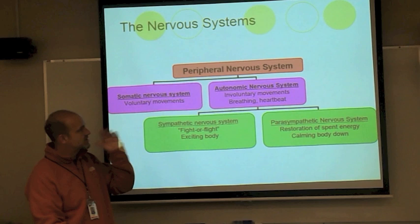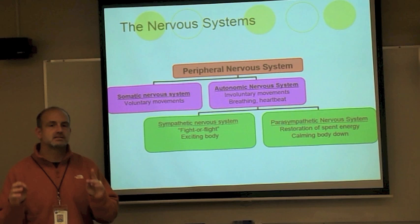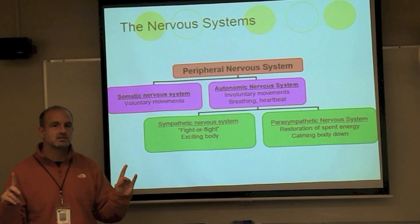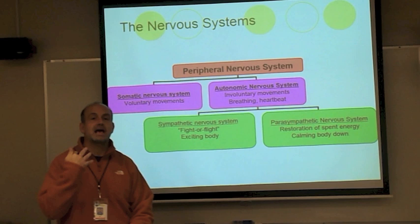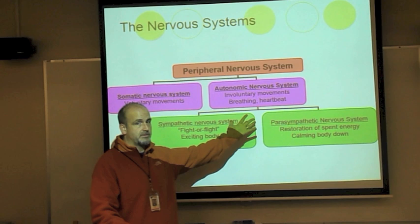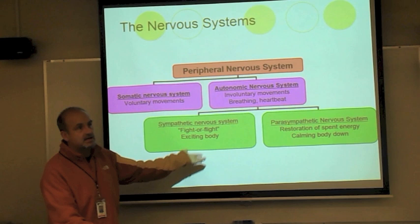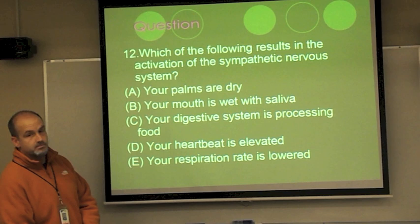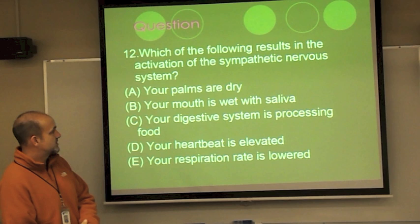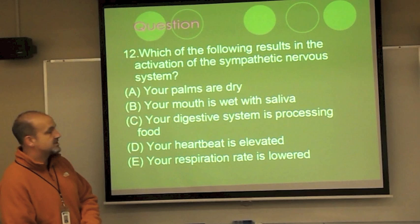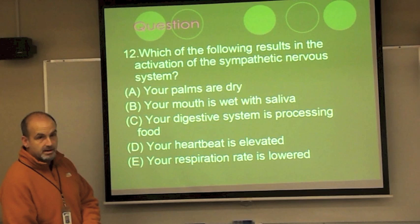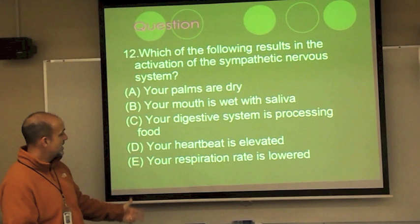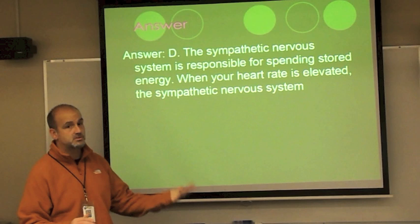To review: the central nervous system is the brain and spinal cord; the peripheral nervous system connects to it. Within the peripheral, the somatic handles voluntary actions; the autonomic handles automatic functions. The sympathetic speeds up — heart rate, digestion acceleration; the parasympathetic returns things to a regular beat. Test question: which of the following results from activation of the sympathetic nervous system? Your palms are dry, mouth is wet, digestive system is processing food, heartbeat is elevated, or respiration rate is lower? The answer is D — elevated heartbeat — the sympathetic speeds up.